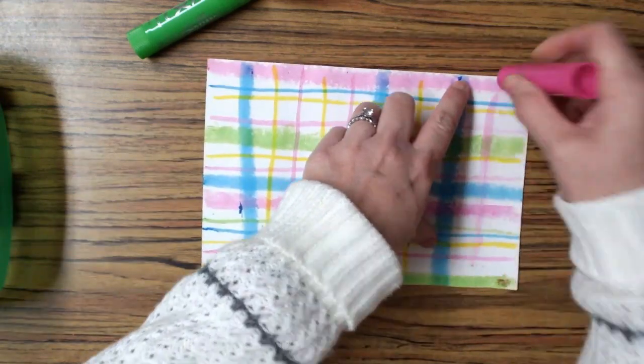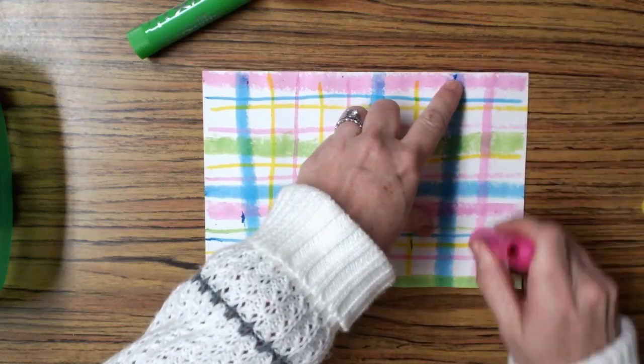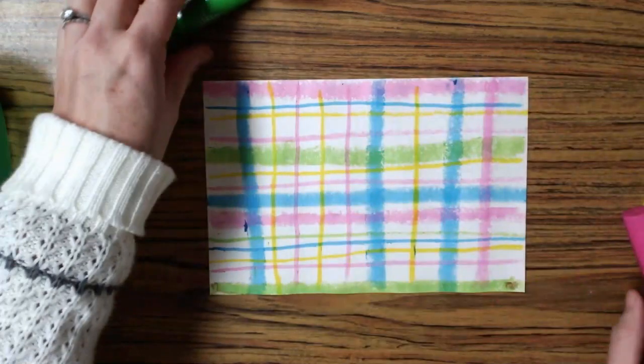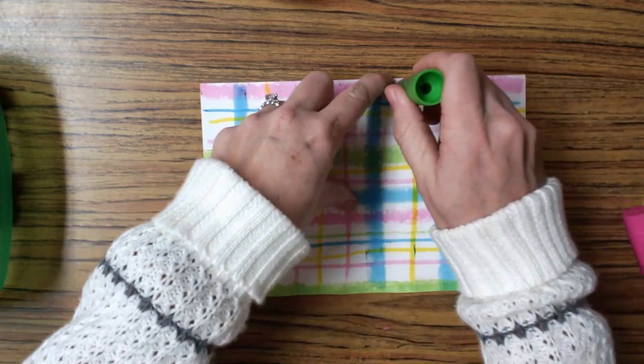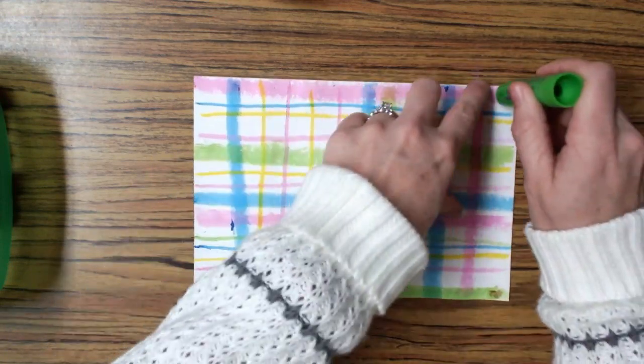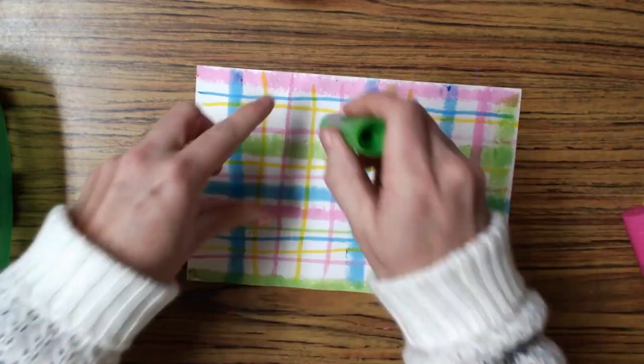Okay, artists, now it's your turn to do this. Your teacher is going to give you a piece of white paper. You'll get a variety of quick sticks that you can use, and you can begin creating your plaid background.